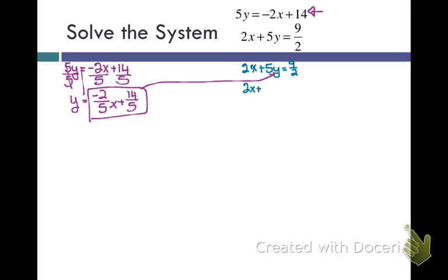That is going to give me 2x plus 5 times the expression negative 2 fifths x plus 14 fifths, and that whole thing is going to equal 9 halves.